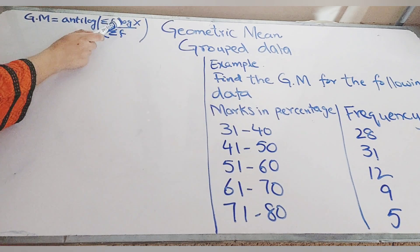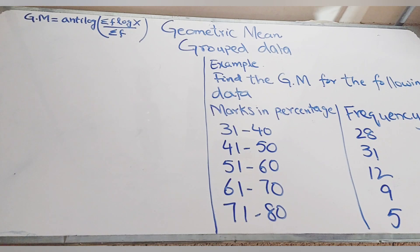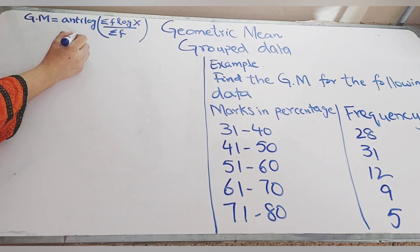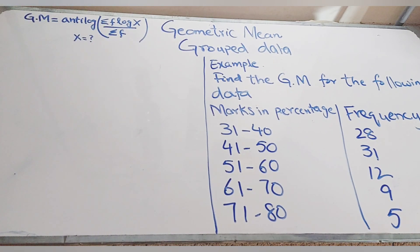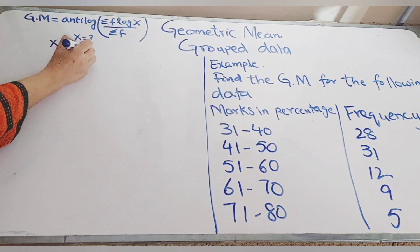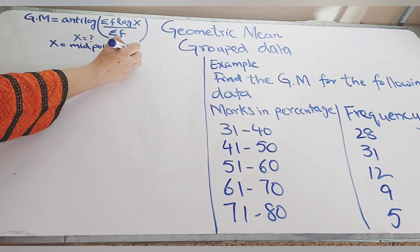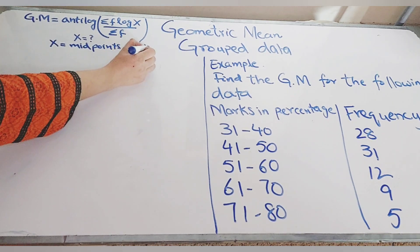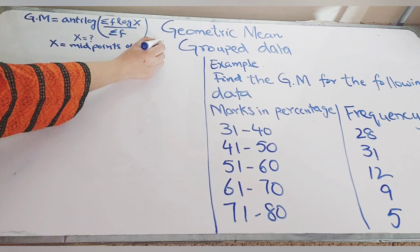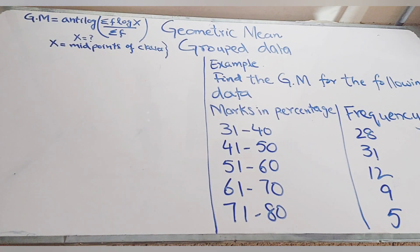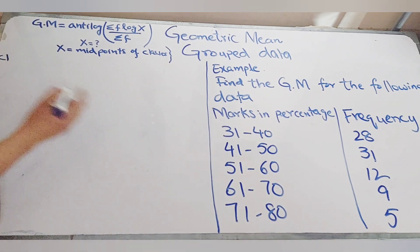We need to find two things: summation F·log(X) and summation F. Summation F is simple — we just add the frequency column. X represents the midpoints of the marks-in-percentage classes that are given, so we will find the midpoints from these classes.